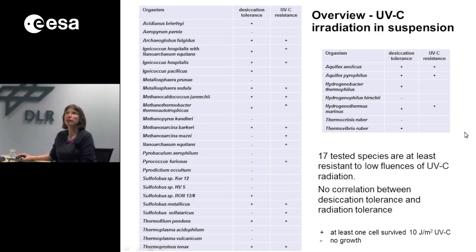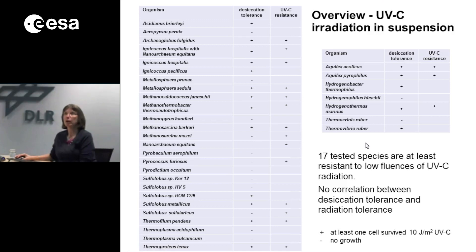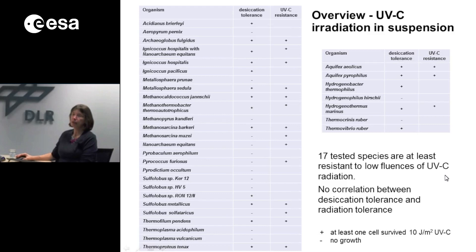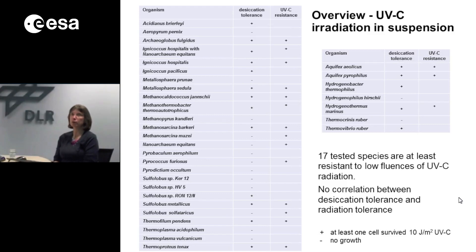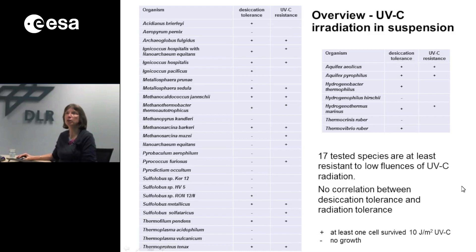Here you can see an overview of results after exposure to UV-C radiation. On the left, the hyperthermophilic archaea; on the right, the bacteria. We found that 17 of the tested species are at least resistant to low fluences of UV-C radiation. But we could see no correlation between desiccation tolerance and UV-C radiation resistance. This is interesting because years ago scientists stated that both tolerances are connected — a hypothesis first formulated for the very radiation-resistant bacterium Deinococcus radiodurans, where some groups think radiation resistance is a consequence of desiccation resistance. But this seems not to be the general case, as we have seen with the species we investigated.